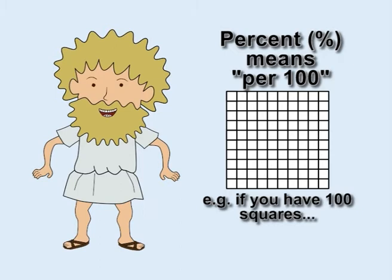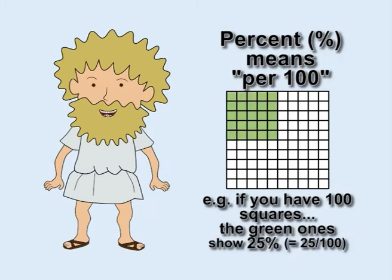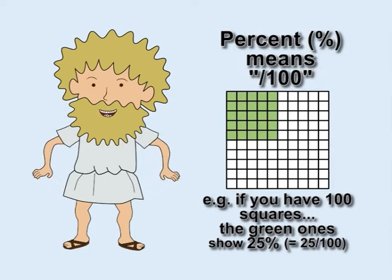For example, 25% means 25 parts per 100, which is the same as the fraction 25 over 100. The percent sign tells you to divide by 100.